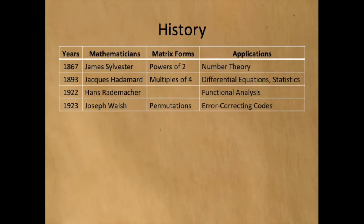Thirty years later, in 1922, Hans Rademacher used Hadamard matrices to perform functional analysis. And in 1923, Joseph Walsh explored permutations of Hadamard matrices, which are now used in error-correcting codes.